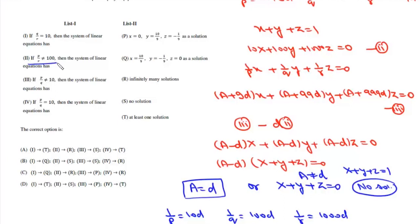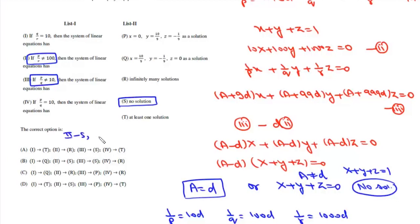So if P/R = 100 and P/Q = 10, there is no solution. Therefore the second and third conditions both match with S — both the second and third items match with S.